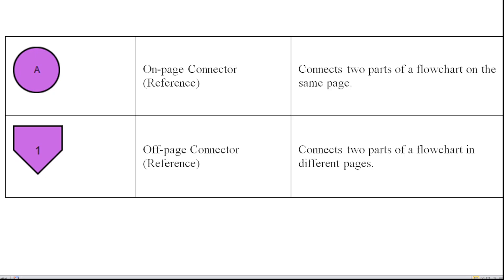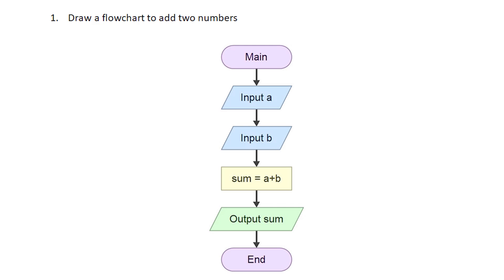Let's go to the examples. Draw a flowchart to add two numbers. Start with the oval-shaped start block. Then, for the input block, accept two numbers — let them be A and B, using a parallelogram. Then in the rectangle block, calculate: Sum equals A plus B. Then display the output Sum using a parallelogram output block. Finally, the oval-shaped stop block. The arrow connects each step.